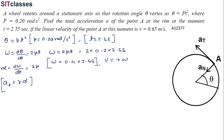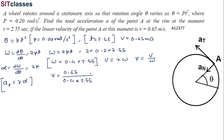Since v = r·omega, we get r = v/omega. The value of v given in the question is 0.65 m/s. So r = 0.65 / (0.4 × 2.55), which when solved gives r approximately equal to 0.64 meters.